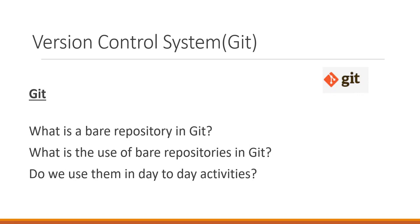In this video, we will see what a bare repository in git is, what the use of bare repositories is, and whether we use them in day-to-day git activities. The bare repository is a repository which can be used for collaboration among multiple developers. Unlike normal git repositories, we cannot perform operations like git add or git commit in these repositories, but they can be used as shared repositories among multiple developers.